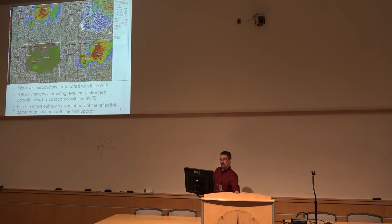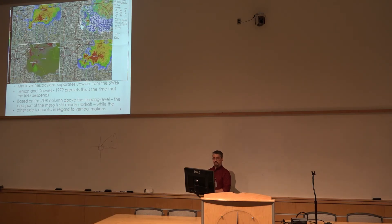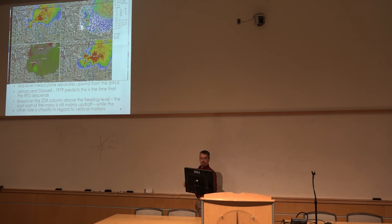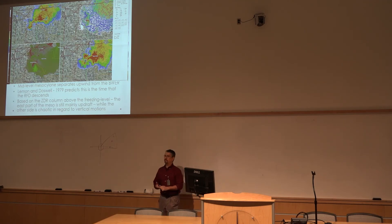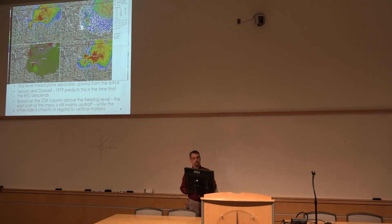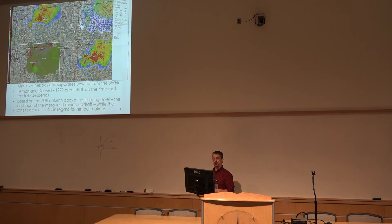In the Lemon and Dosswell paper, they predict that at some point the mesocyclone will actually move upshear of the B-wear, and it's during this time period that the rear flank downdraft is likely to start to descend. You don't see many papers written like this anymore. It actually worked out really well in this case where you can see the mesocyclone has shifted to the southwest of the red square that marks the B-wear.